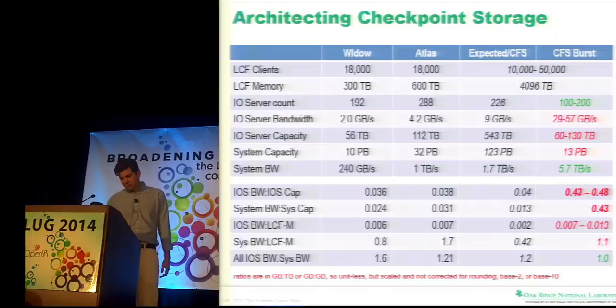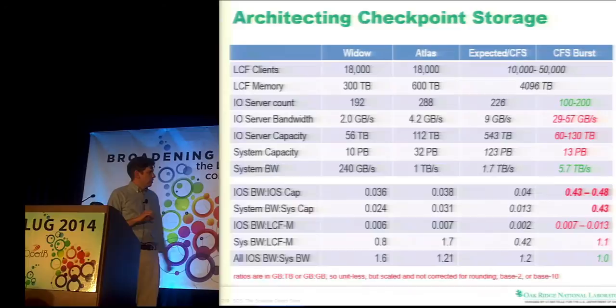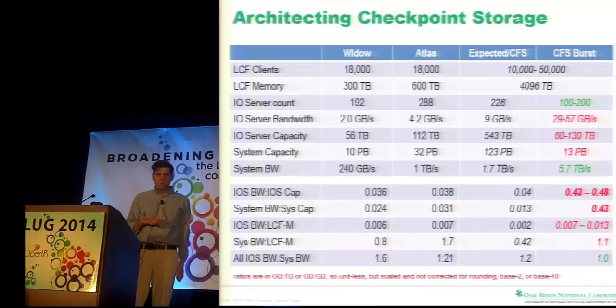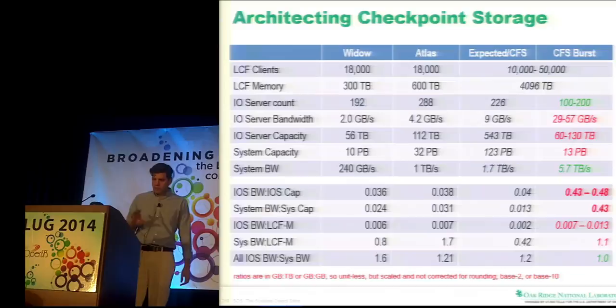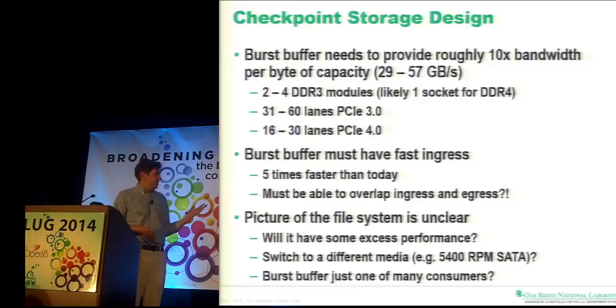What they've proposed along with that is a burst buffer, and this is where things get challenging. If the burst buffer is roughly 100 to 200 nodes, we have several issues: those nodes need an ingress bandwidth of 5.7 terabytes per second, must drive a file system at around 1.7 terabytes per second, and must encapsulate about 13 petabytes of storage. All of those are pretty difficult to accomplish. There's roughly a 10x bandwidth-per-byte-of-capacity increase required.